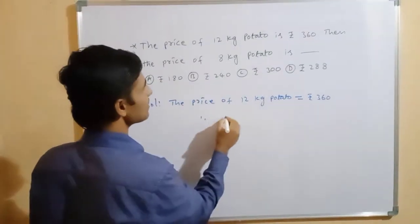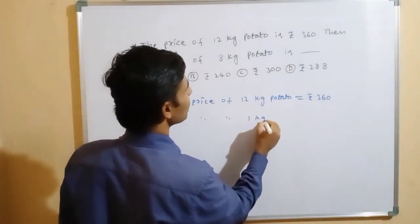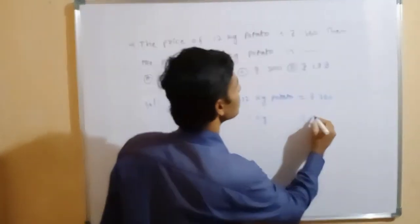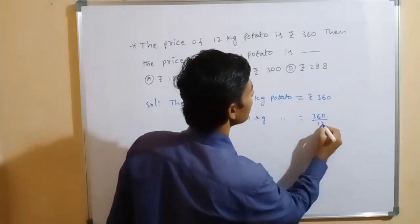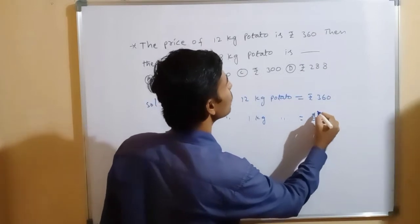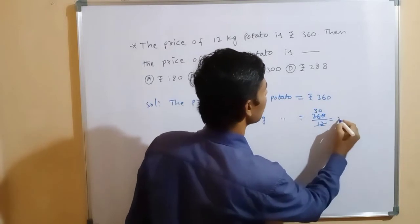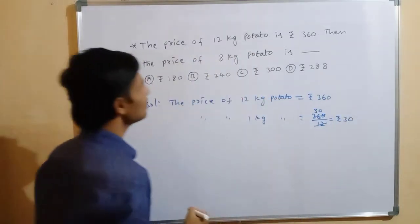here the price of 1 kg potato equal to 360 divided by 12. So, 12 into 30. Okay. So, 1 kg potato equal to Rs. 30. So,